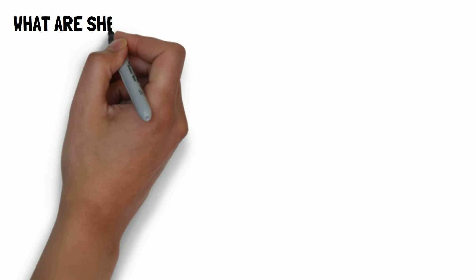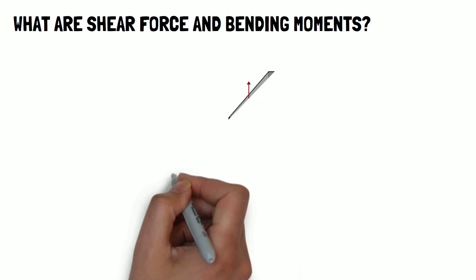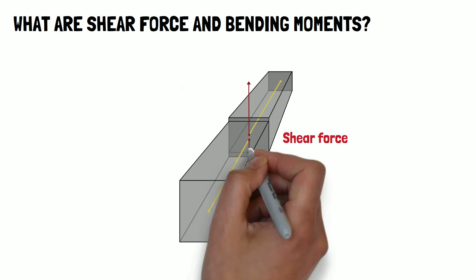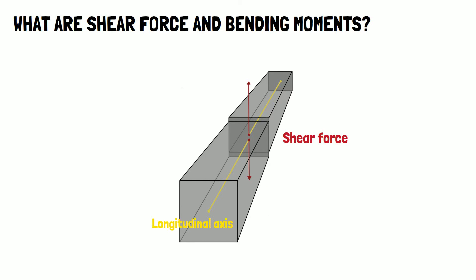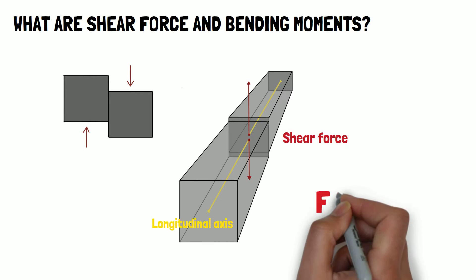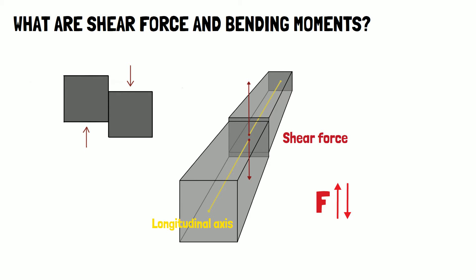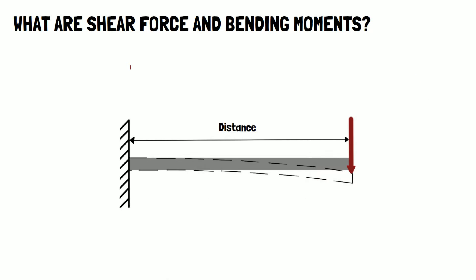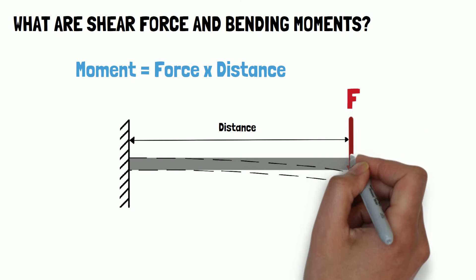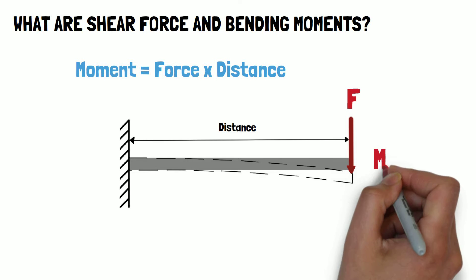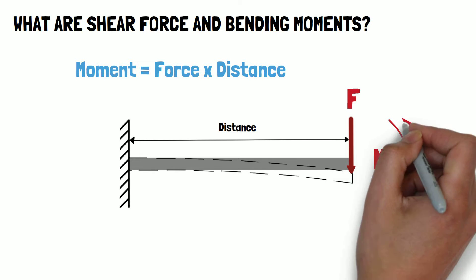Let's start by defining what shear force and bending moments are. Shear force is the force that acts perpendicular to the longitudinal axis of the beam. It tends to cause the beam to slide or shear apart at a particular section. It is denoted as F and can act upwards and downwards. A bending moment happens when there is a distance between the applied force and the point in which the moment is acting. The force then causes the beam to bend about the point. It is denoted as M and can either act clockwise or anti-clockwise.